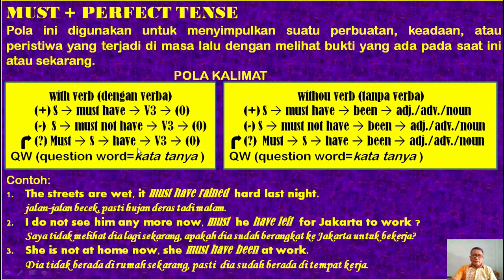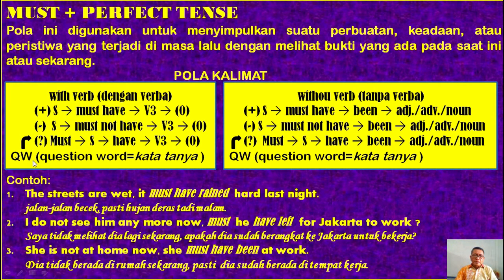Interrogative atau pertanyaan yang dijawab ya atau tidak: pola kalimatnya adalah 'must', subjek, 'have', V3, objek. Apabila kita menanyakan banyak hal, maka kita menggunakan kata tanya yang diletakkan di paling depan, kemudian diikuti dengan 'must', subjek, 'have', V3, objek.